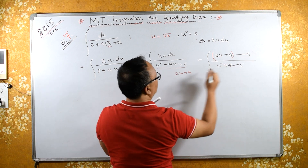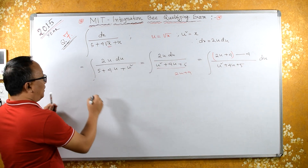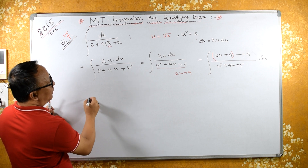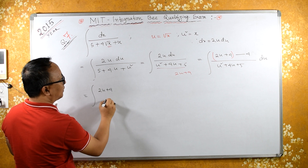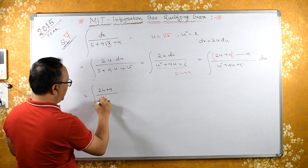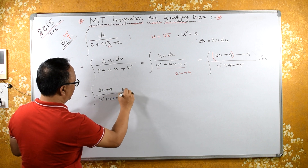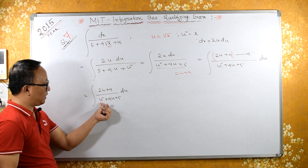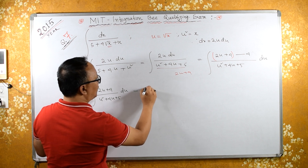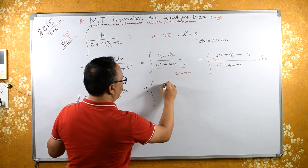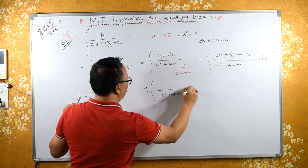So we separate this into two parts: integral of (2u plus 4) upon (u squared plus 4u plus 5) du, minus 4 times integral of 1 upon (u squared plus 4u plus 5) du.